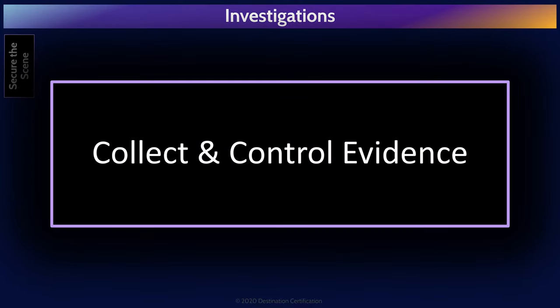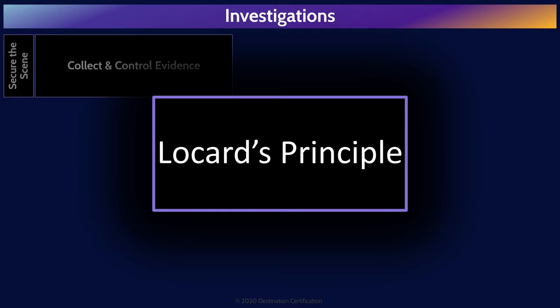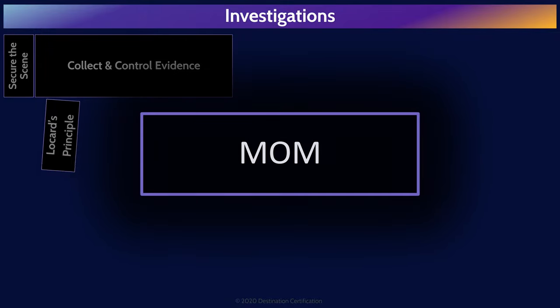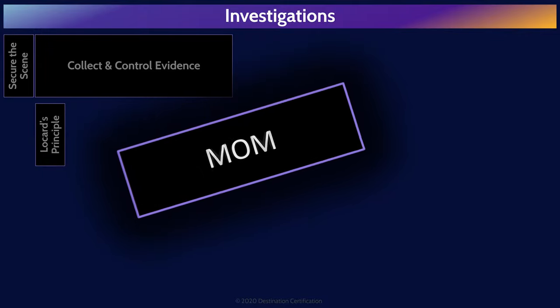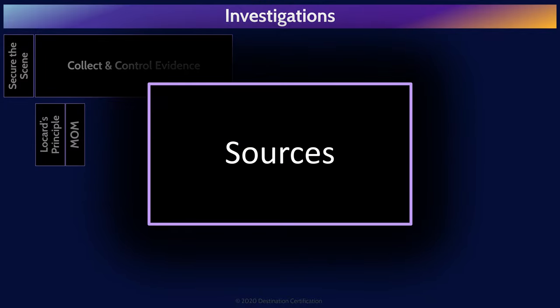Once we begin collecting evidence, there are a few principles, techniques, and sources we should be aware of. Locard's principle often comes up on the exam. It states that when a crime is committed, the perpetrator will leave something behind and take something with them. Locard's principle helps investigators think through where they may be able to find evidence. Investigators also need to find MUM — Motive, Opportunity, and Means. This is an investigative technique used to determine if a suspect has the motive, for example financial gain, the opportunity — were they at the crime scene — and means, the tools and technical expertise necessary.